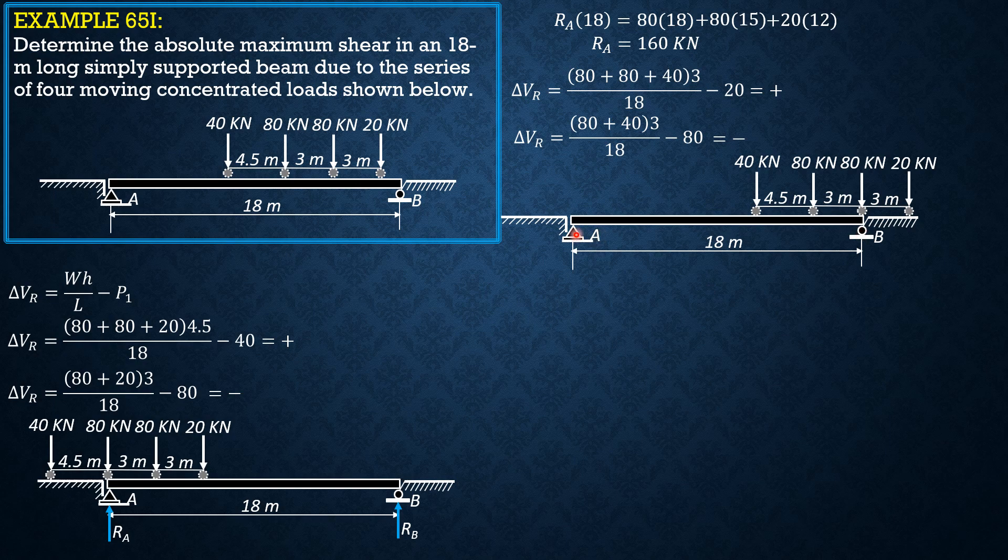So that should be the positioning of the load so that Rb is maximum. We sum up moments about A equals zero, and take note that 20 is not included, it is on the ground. So Rb times 18, this is 10.5, 18 minus 3 minus 4.5, so 10.5. So Rb times 18 equals 80 times 18 plus 80 times 15, 18 minus 3 is 15, minus 4.5 is 10.5, so plus 40 times 10.5.